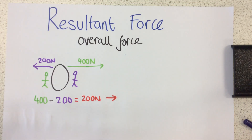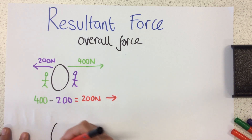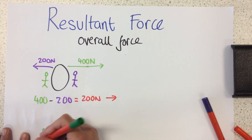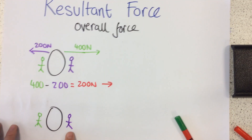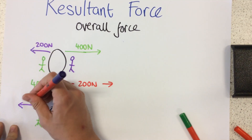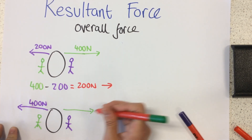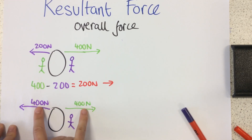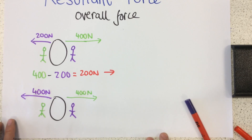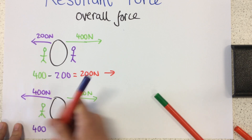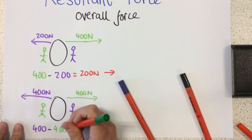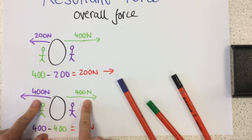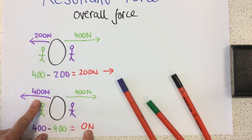Next up, another example. Let's imagine the same situation, but this time the person in purple has gone to the gym and got a lot stronger. So this time we've got the same situation — they're both pushing in opposite directions — but this time they're both applying a force of 400 newtons. What's the resultant force? Well, because those forces are acting in the opposite direction, the resultant force is actually zero, because the two forces are balanced. So there's no overall resultant force in either direction.